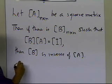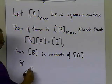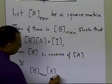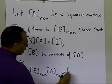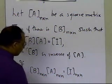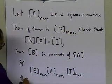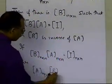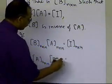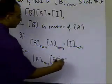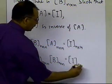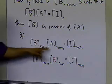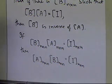What happens is that if you get the n by n matrix B multiplied by the A matrix and it turns out to be an identity matrix, then you also find out that A times B will also turn out to be the identity matrix. This is one place where the multiplication of two matrices turns out to be commutative. What this means is that if B is the inverse of A, then A is the inverse of B.